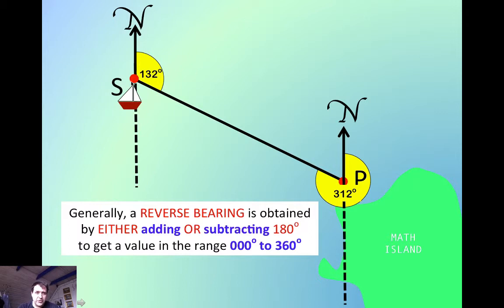For example, 132 plus 180 gave you the 312, and 312 minus 180 would give you the 132. So depending on where you are, you're either adding or subtracting 180 degrees.